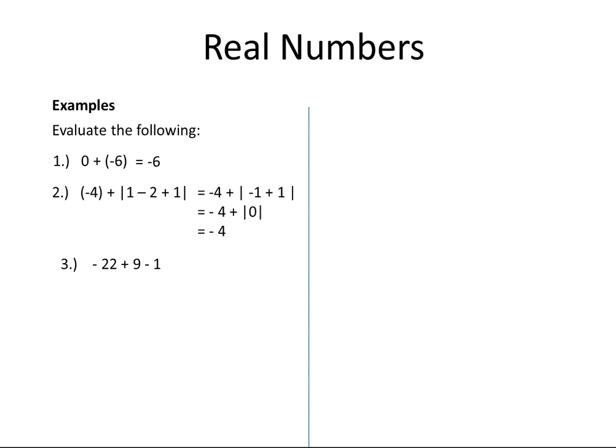Minus 22 plus 9 minus 1. We see only plus and minus signs, so we work from left to right. Minus 22 plus 9 is equal to minus 13. Minus 13 minus 1 is equal to minus 14.